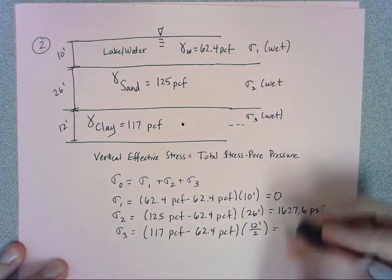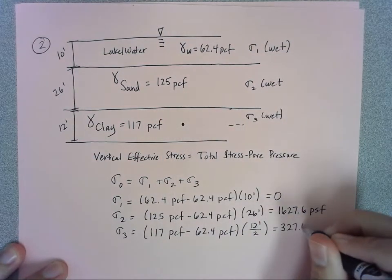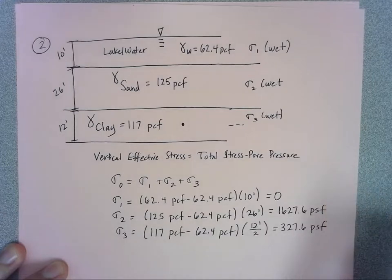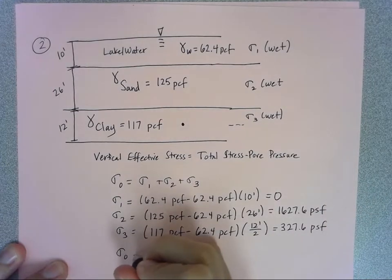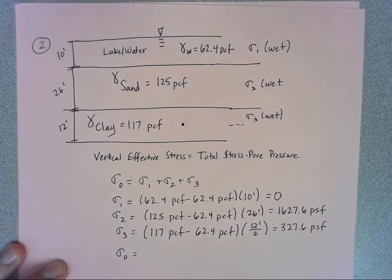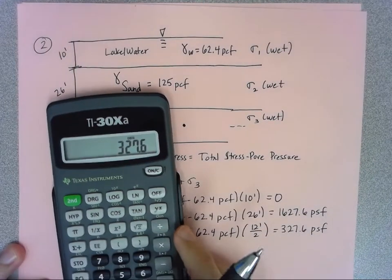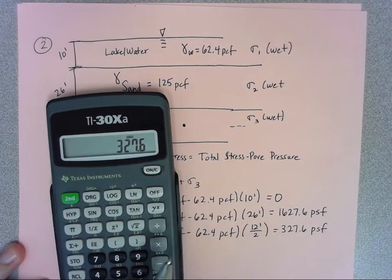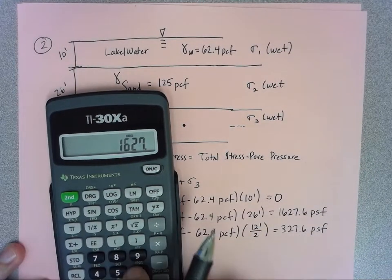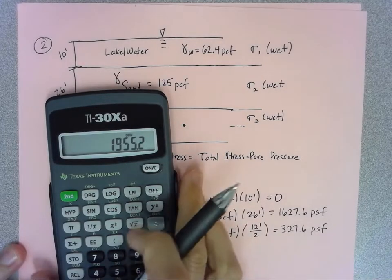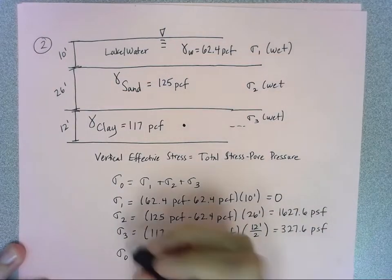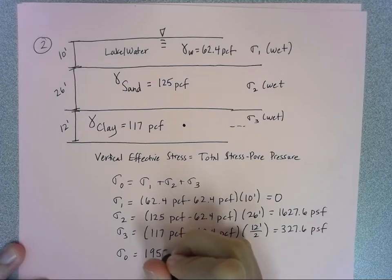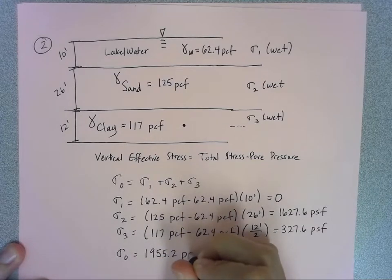That's 327.6 pounds per square foot. To find my sigma naught, I'm just going to add all those up - I only have two really. I have 327.6 plus 1627.6, and that gives me a total of 1955.2 pounds per square foot.